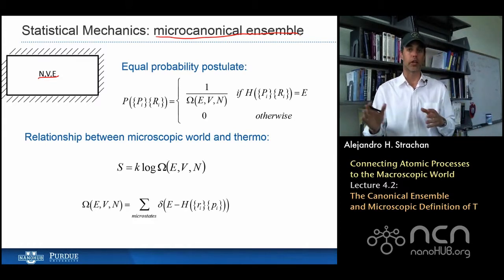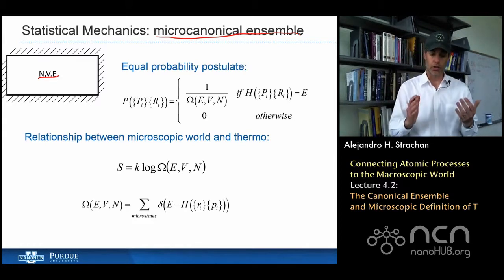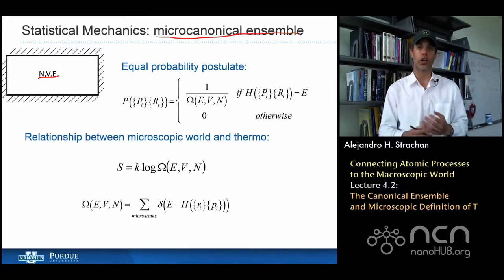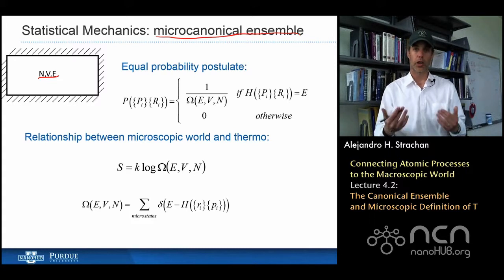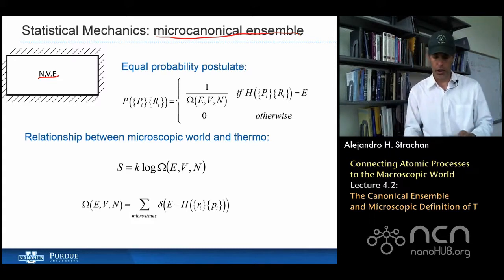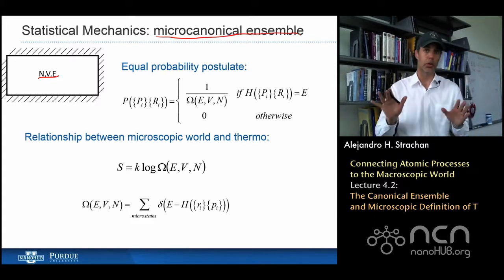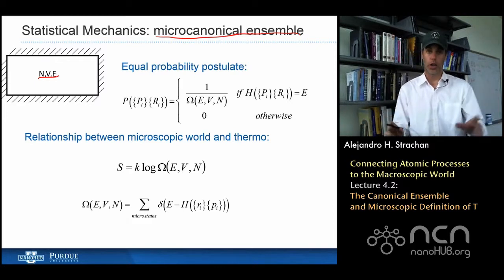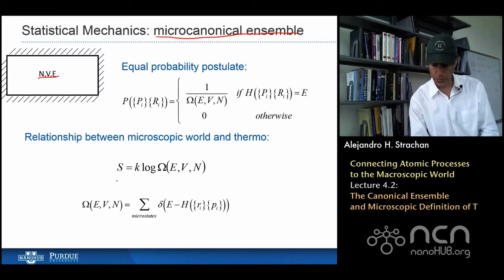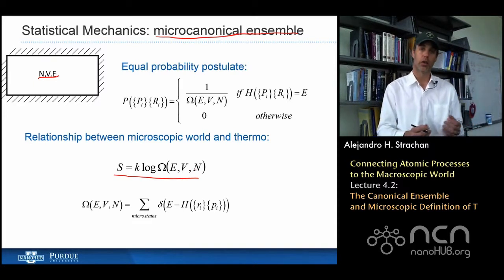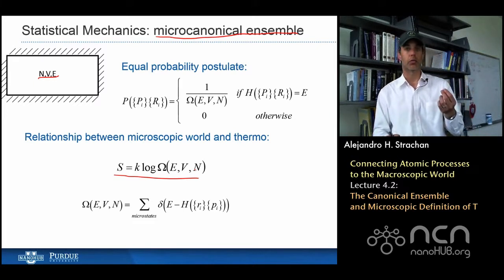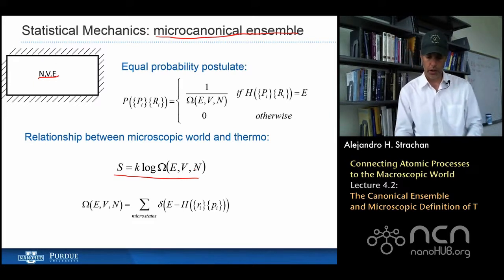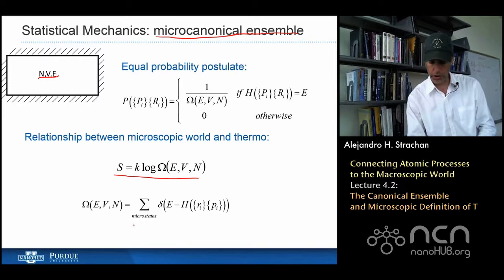Microcanonical ensemble means constant energy ensemble. We started by saying that all states consistent with the total energy are equally likely, have equal probability, and then we derived a definition — a connection between the microscopic world and thermodynamics. We arrived at the definition of entropy, which is Boltzmann constant k times the log of the number of states.